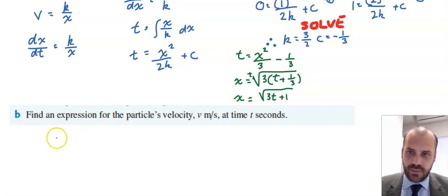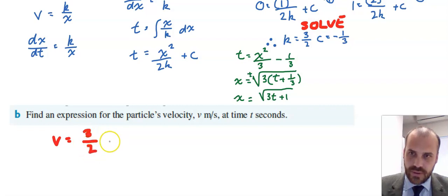So we have everything we need. We know that velocity is equal to k, which is 3 over 2, times 1 over root(3t + 1). All right.